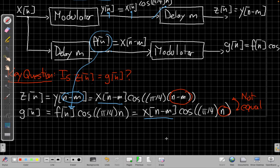So because these are not equal, that tells us that the result of this means the system, the modulator system, is not time invariant.